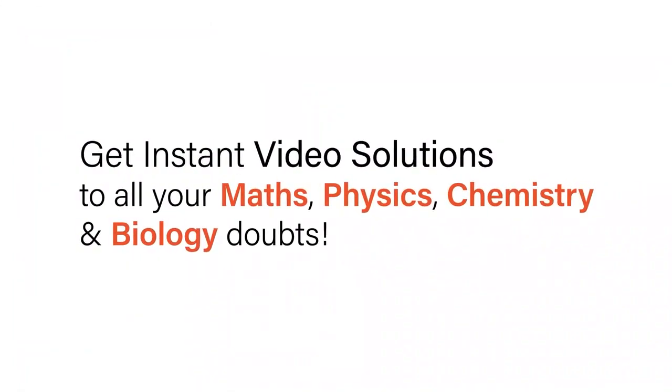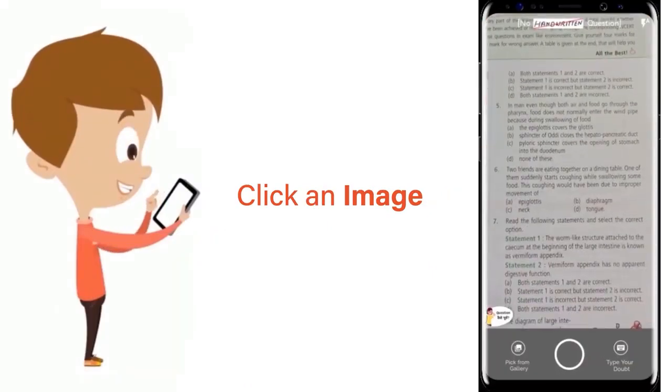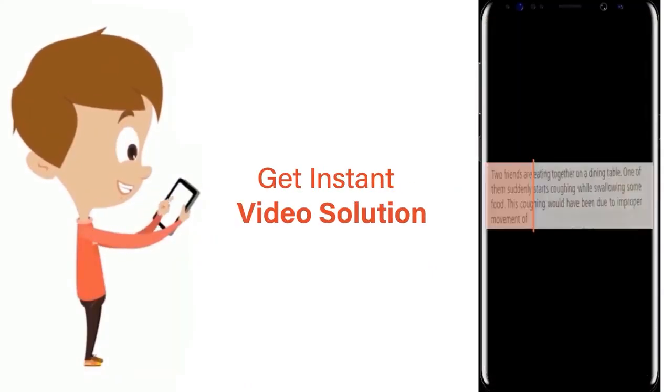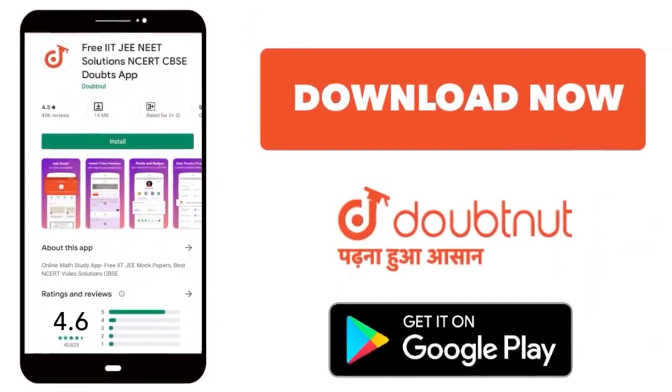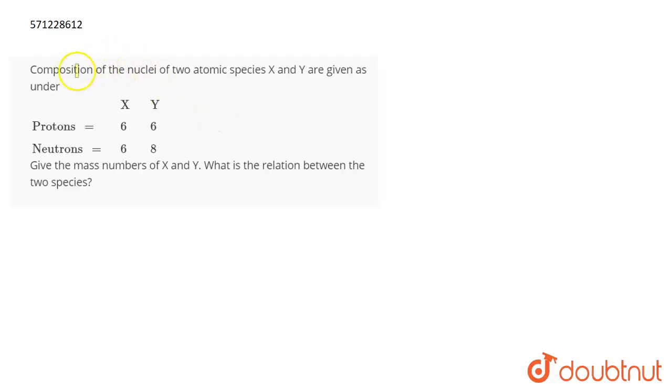With Doubtnet, get instant video solutions to all your maths, physics, chemistry and biology doubts. Just click the image of the question, crop the question and get instant video solution. Download Doubtnet app today. The question is: composition of the nuclei of two species X and Y are given as under.